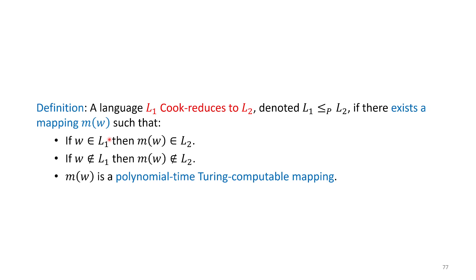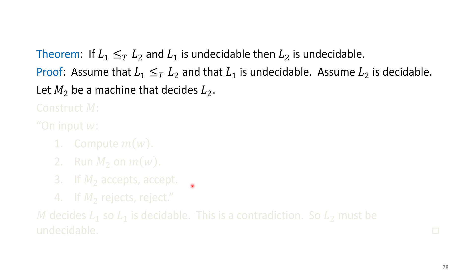Another type is a polynomial time reduction, or Cook reduction, named after another researcher. This adds the constraint that the Turing-computable mapping is also computable within polynomial time — not exponential time or some other enormous amount. If you have that, it helps us define the set of NP-complete problems, which is an important set within complexity theory, a field born out of computability theory.